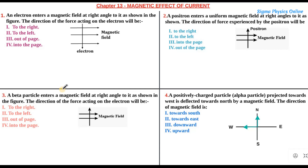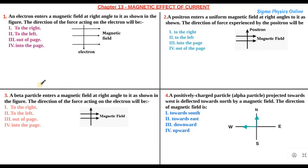Let's start with the first question. The first question is: an electron enters a magnetic field at right angles to it as shown in the figure. The direction of force acting on the electron will be to the right, left, out of the page, or into the page.